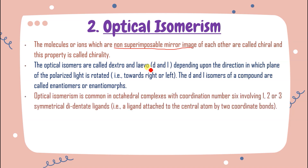Optical isomerism is common in octahedral complexes (coordination number six) involving one, two, or three symmetrical bidentate ligands. To show optical isomerism there must be at least one bidentate ligand. If no bidentate ligand is present, optical isomerism is not possible for that compound.